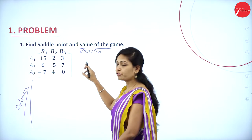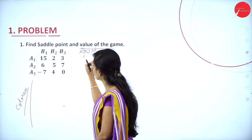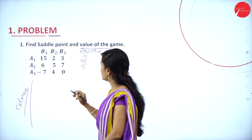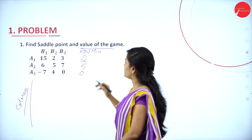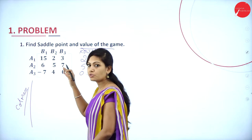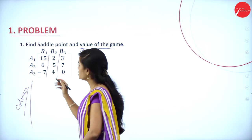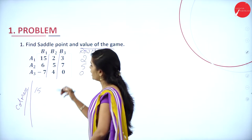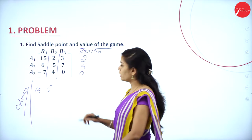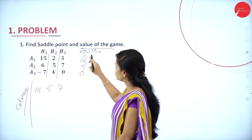Keep in mind: this is row minima and column maxima — don't get confused. First, find the least value in every row. In the first row the least value is 2, in the second row it is 5, in the third row it is 0. For column maxima, find the highest value in each column. In the first column it is 15, in the second column it is 5, and in the third column it is 7.